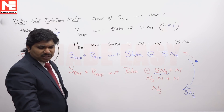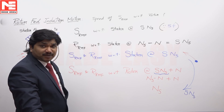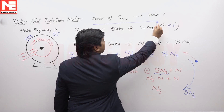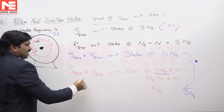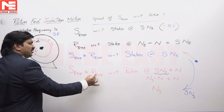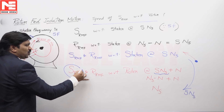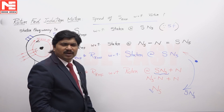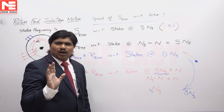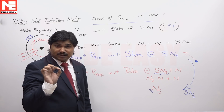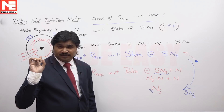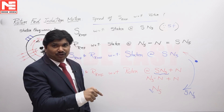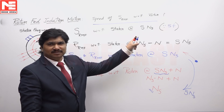So finally, in this case, the speed of the stator magnetic field with respect to the rotor is Ns. Remember this simple logic: any stator magnetic field or rotor magnetic field with respect to the rotor in a rotor-fed motor will be at Ns. With respect to the stator in a rotor-fed motor, it will be at s·Ns. Remember that.